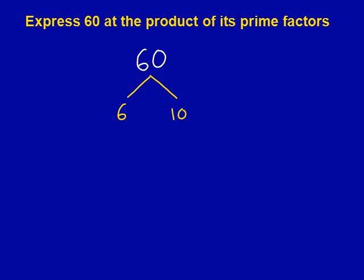We then split 60 up into two numbers that times together to give 60. I've chosen 6 and 10 as you can see in yellow on the example. You could have also chosen 3 and 20 or 30 and 2 and it would all work the same in the end. However, in this example we've chosen 6 and 10.